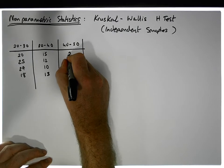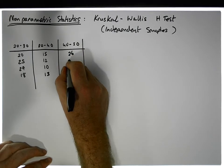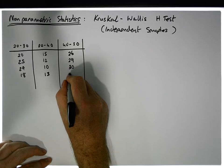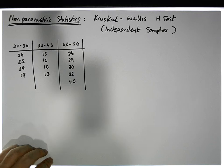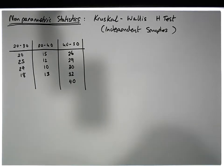And the 40 to 50 year olds spent 26, 29, 30, and 32. And let's say one of the 40 to 50 year olds spent 40 euros on lunch. Maybe they're buying their kids lunch as well, but they spent 40 euros on lunch.